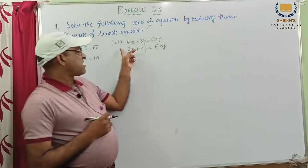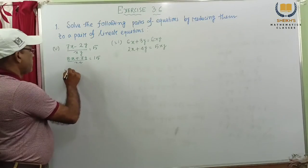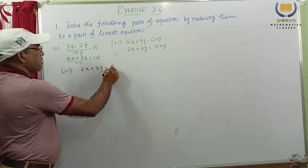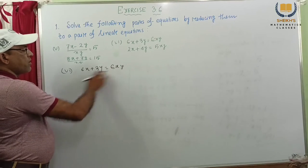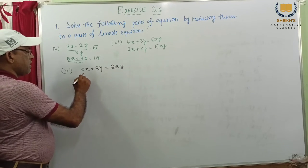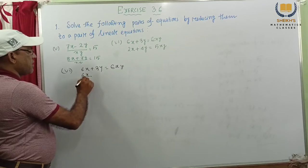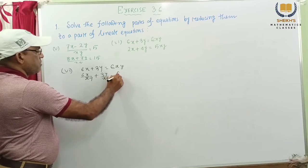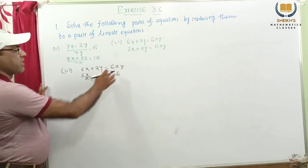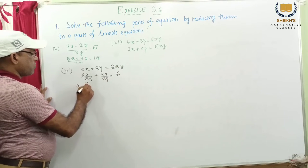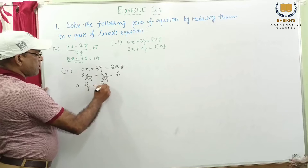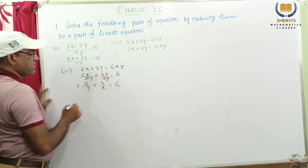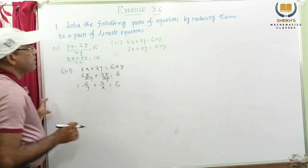Very easy. Problem number 6 is given. So this is 6x plus 3y equal to 6xy. So we're dividing both sides by xy. 6x by xy, 3y by xy equal to 6. Dividing both sides by xy, then xy cancel, we get 6. So this will be 6 by y plus 3 by x equal to 6. The xx cancel, the yy cancel, we get this.